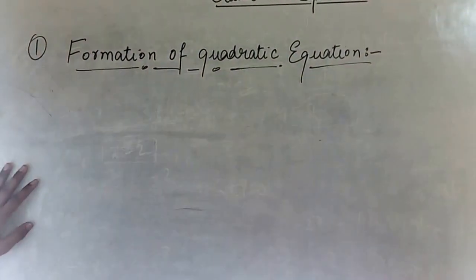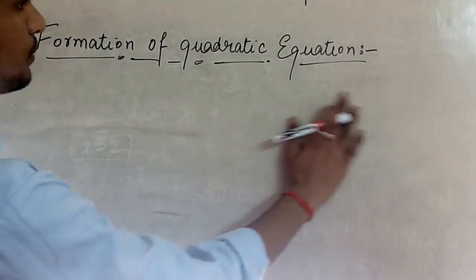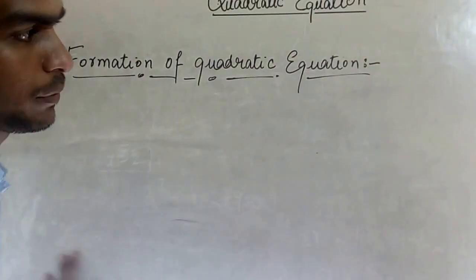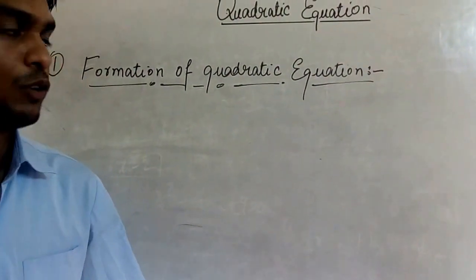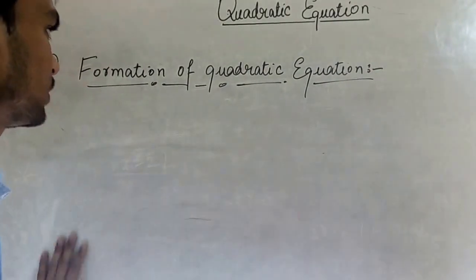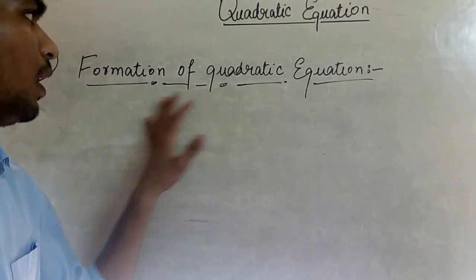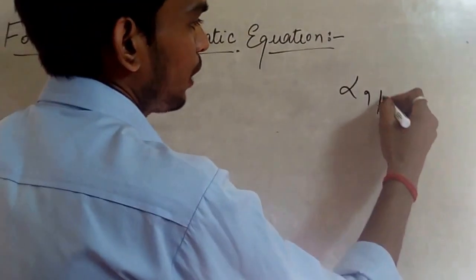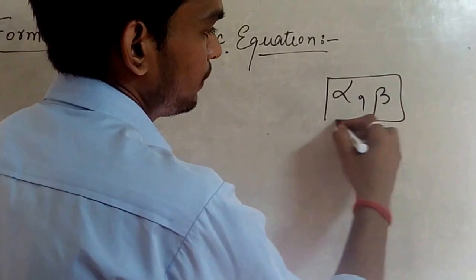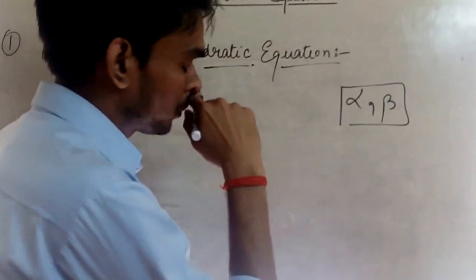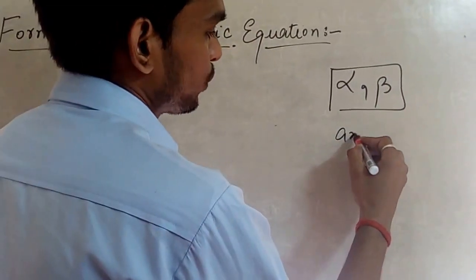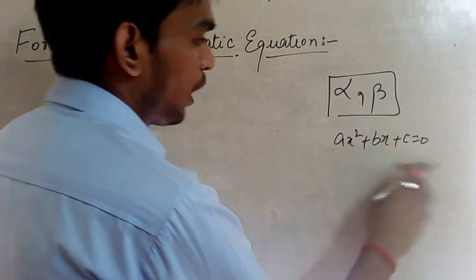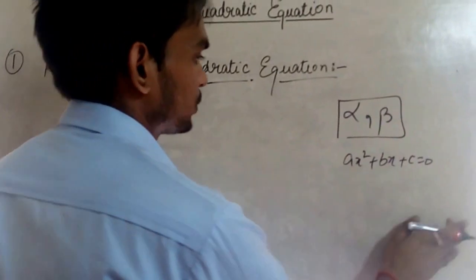Master Gurdos Kumar Rajpur. In this lecture we will discuss the formation of a quadratic equation. If we have the value of the roots — alpha and beta — of the quadratic equation ax² + bx + c = 0, then how do we obtain the actual quadratic equation?